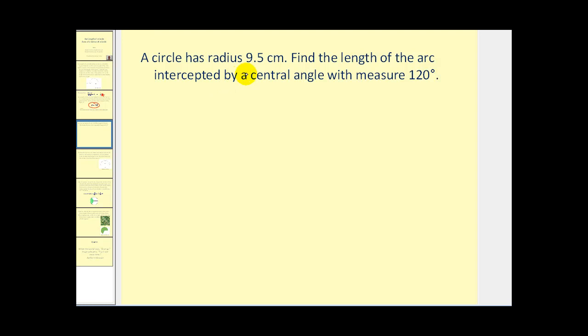A circle has radius 9.5 centimeters. Find the length of the arc intercepted by a central angle with measure 120 degrees. Here's our formula for arc length. We know our radius is 9.5 centimeters and our central angle is 120 degrees. First we need to convert this into radians. We multiply by π radians over 180 degrees. These have a common factor of 60, so we have 2π divided by 3 radians.